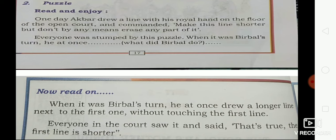Did you understand anything from this paragraph? Akbar gave a task to his ministers by drawing a line, and he asked them to make that line shorter. But the condition was they should not touch that line. Okay, now turn to the next page.